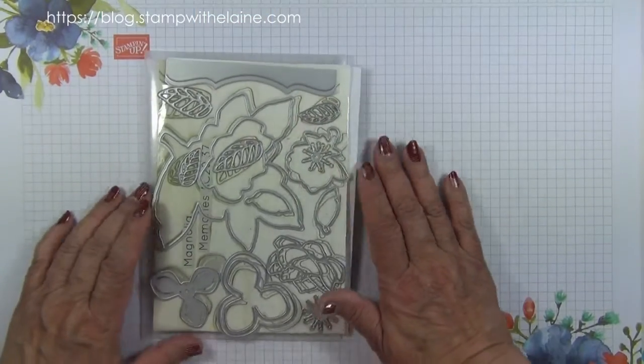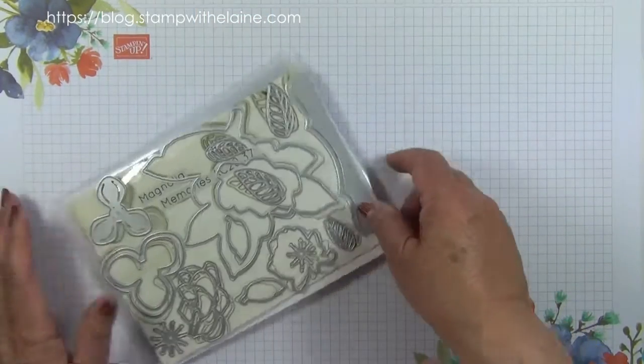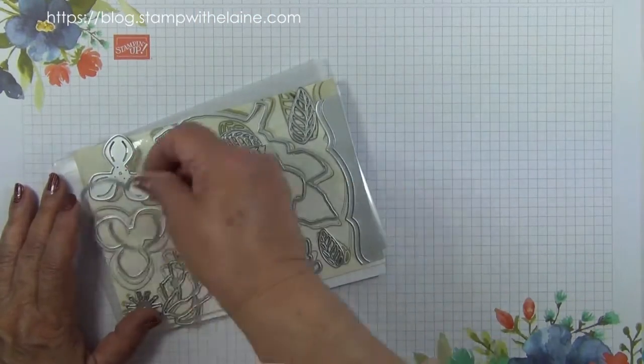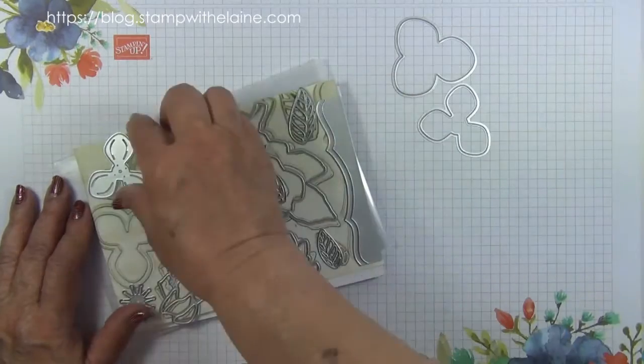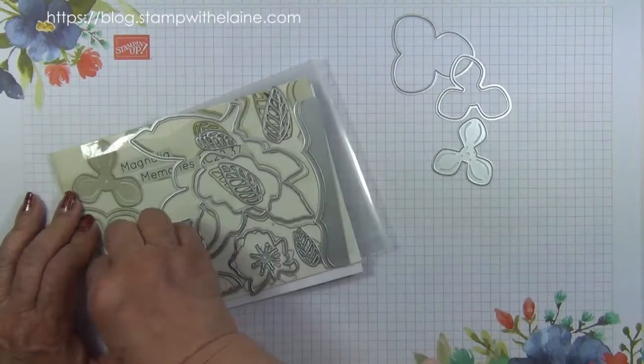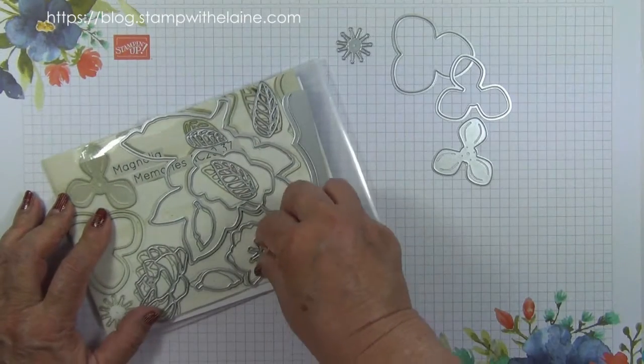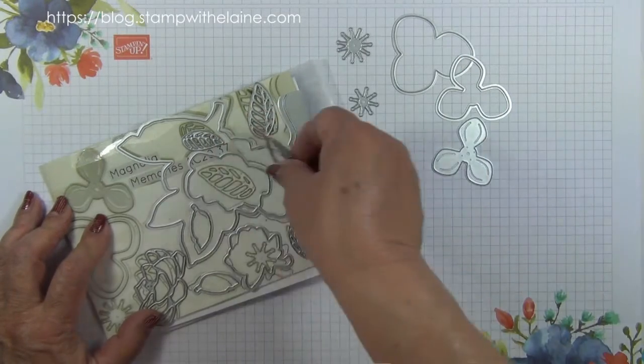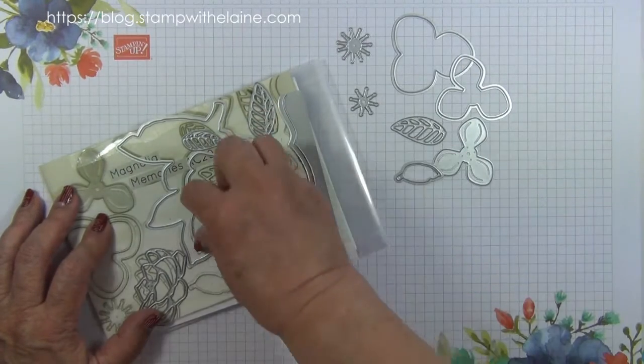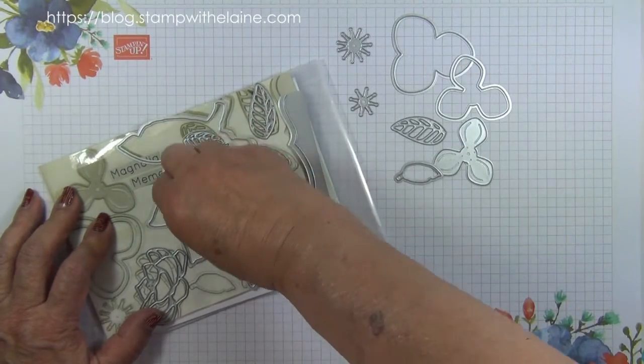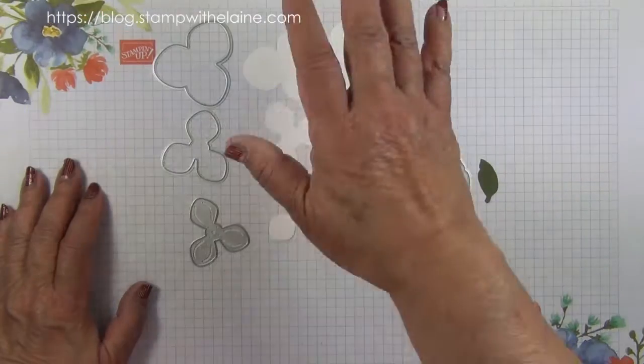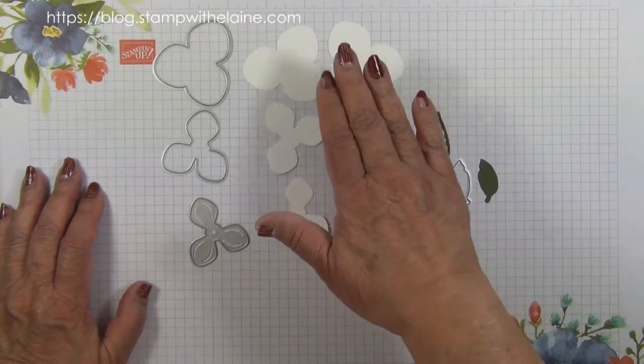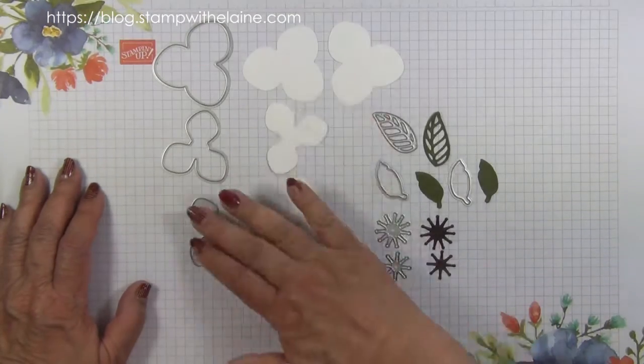The other items you need are the Magnolia Memories dies. I've used the flower petals and the flower centers, the large leaf, and the two solid leaves. You need some Whisper White scraps of cardstock to die cut your flowers.